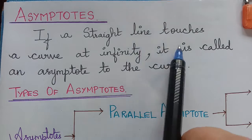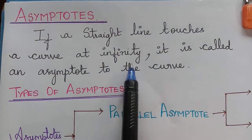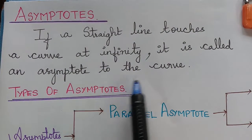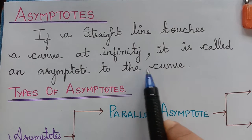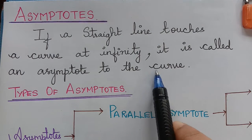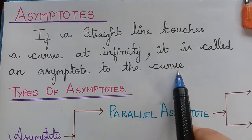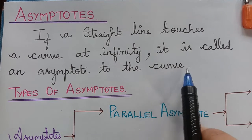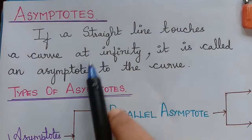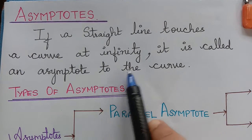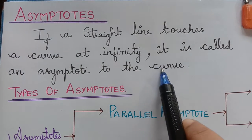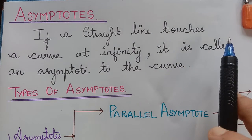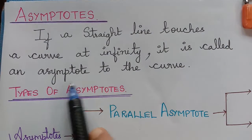If a straight line touches a curve at infinity, it is called an asymptote to the curve. We already know that if a line touches a curve, that line is said to be the tangent to the curve. So, in order to define asymptote, we can simply say that the tangent that touches the curve at infinity is called the asymptote.